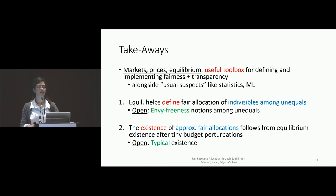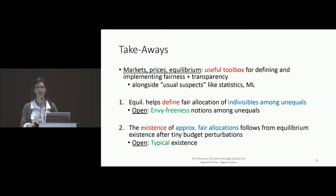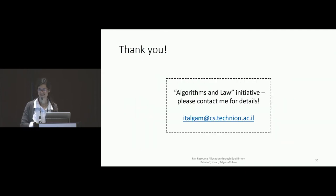One high-level takeaway of this paper is that markets, prices, and equilibrium are useful tools when you try to define and implement fairness alongside the usual suspects of machine learning. We've seen that equilibrium can help define fairness — for example in the context of indivisibles among unequals, which was understudied — and that the existence of approximate fair allocations can follow from equilibrium existence once you add small perturbations to the budgets. Thank you very much.